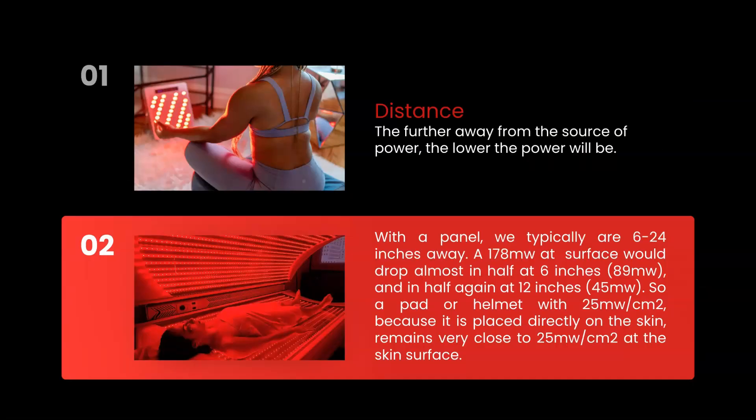But we're leaving something very important out. And that's distance. The further away from the source of the power, the lower the power will be. This is because all those little photons end up running into molecules in the air and getting deflected and scattered. And with a panel or a full bed, we are typically positioning our body 6 to 24 inches away. So that's a lot of molecules to hit along the way. So how does that distance affect the power we receive? 178 milliwatts at the surface of the device would drop almost in half at 6 inches to about 89 milliwatts. And half again at 12 inches away to 45 milliwatts. So a pad or helmet with 25 milliwatts per centimeter squared, which is placed directly on the skin, would lose very little power and thus only be slightly less powerful than the panel.